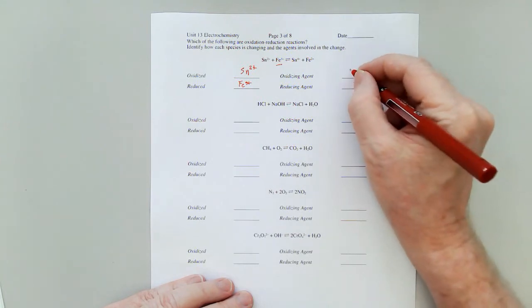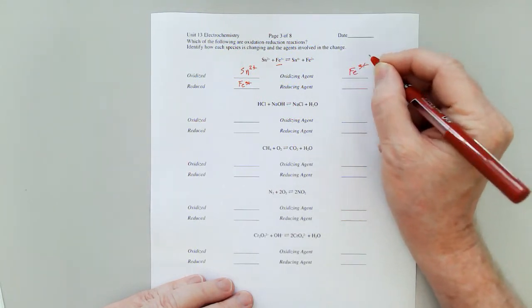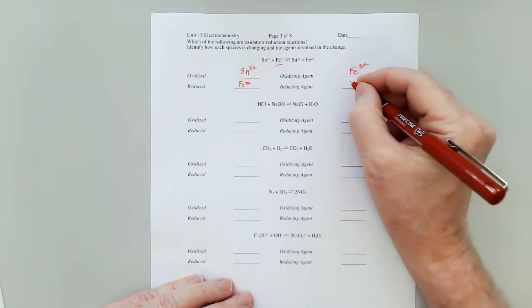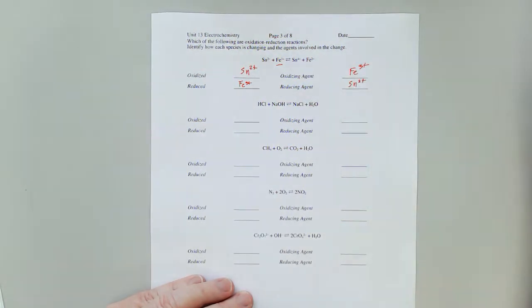Now, what's the oxidizing agent? That has to be the Fe3 plus because it's the thing that's reduced. So then the reducing agent is the Sn2 plus.